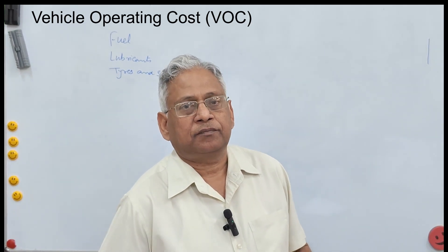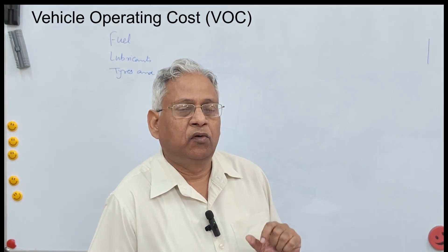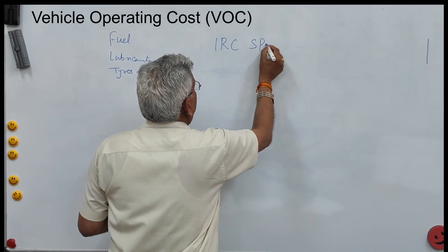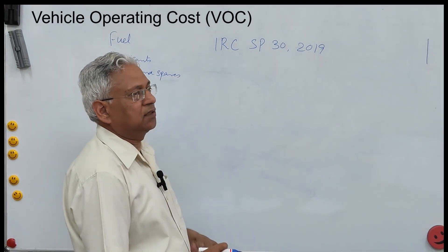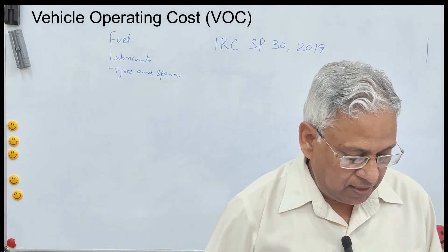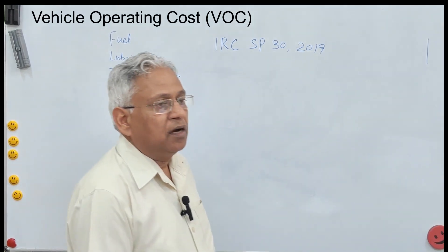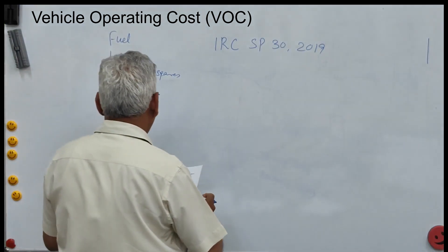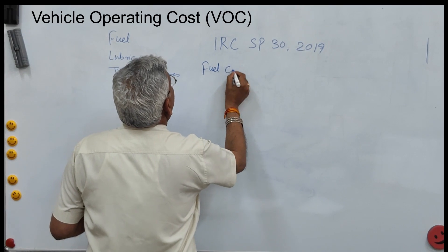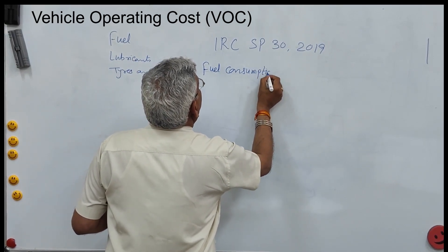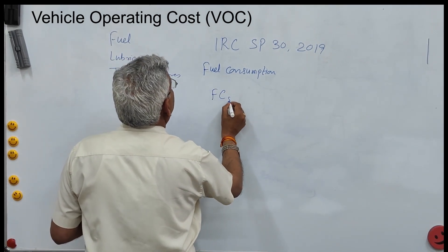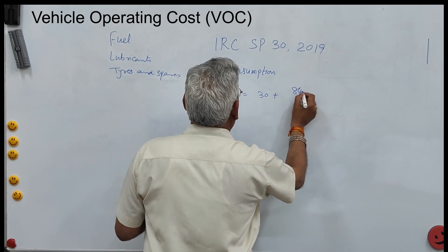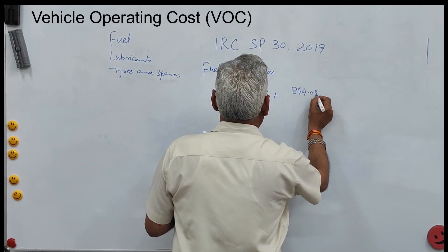All components of vehicle operating cost have been worked out for Indian conditions and are given in IRC SP 30 2019. The latest edition of this manual is 2019, and it gives each component of the vehicle operating cost. Certain equations are given — for example, for fuel consumption for a small car Cs, the equation is: 30 plus 844.085 upon V.